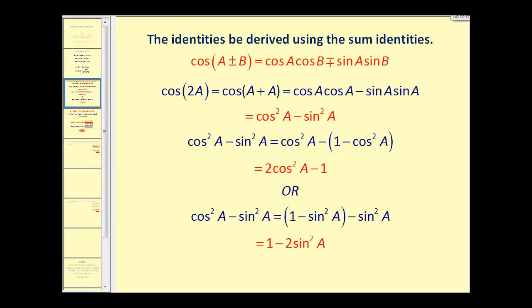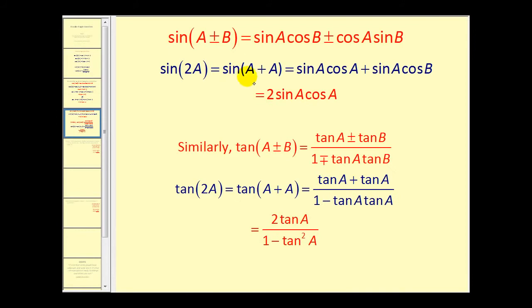For the sine of two A, we'll use a sum identity again, and instead of using A plus B we'll use A plus A, and we can obtain two times sine A cosine A.